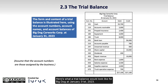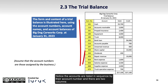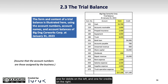Here's what a trial balance would look like for Big Dog at January 31, 2023. Notice the accounts are listed in sequence by their account number and there are two columns, one for debits on the left and one for credits on the right. At the bottom, we see that the total debits and total credits are equal at $27,100.